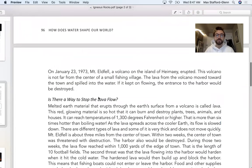On January 23rd, 1973, Mount Eldfell, a volcano on the island of Heimaey, erupted. This volcano is not far from the center of a small fishing village. The lava from the volcano moved toward the town and spilled into the water. If it kept on flowing, the entrance to the harbor would be destroyed.